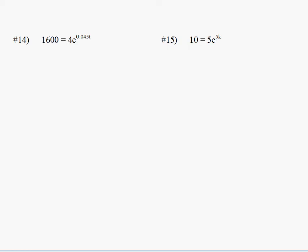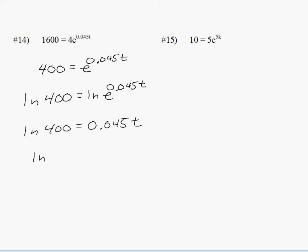14. Once again, if you want to get the e to the exponent by itself at the beginning, it would be a good idea. Divide both sides by 4. 1,600 divided by 4 is 400. Then natural log both sides. That's going to simplify the right side to just 0.045t, which was the exponent. Divide both sides by the coefficient of t. Put it in your calculator. You get 133.14.